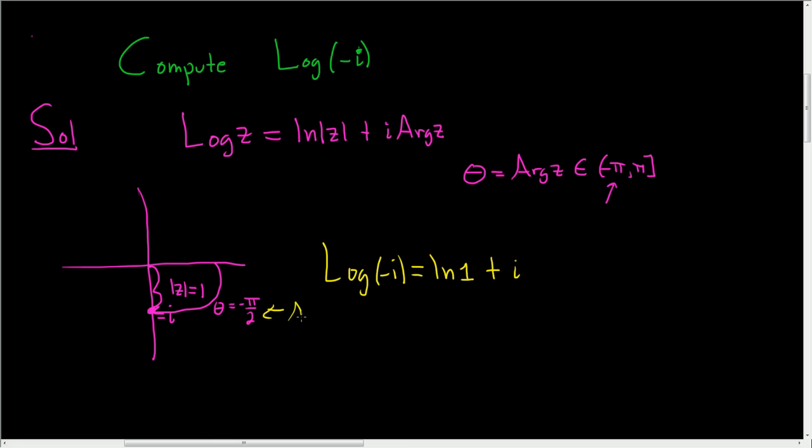Well, the argument of z is this angle here. So in this case, it's negative pi over 2. The natural log of 1 is 0. So we get 0 minus i pi over 2. So we end up with minus i times pi over 2.